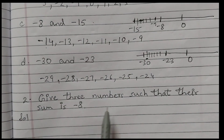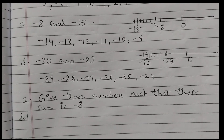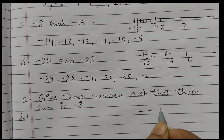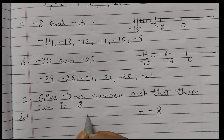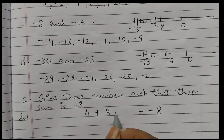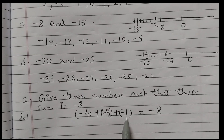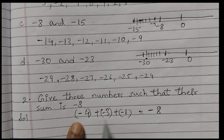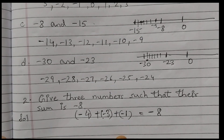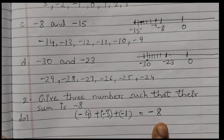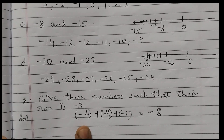Question number 2: give 3 numbers such that their sum is minus 8. We need 3 numbers that when added together give minus 8. First let's see how to make 8: 4 plus 3 plus 1 equals 8. So to get minus 8, just put a minus sign on each: minus 4, minus 3, and minus 1. There is no fixed answer — there are many different ways to get minus 8. This is just one example.